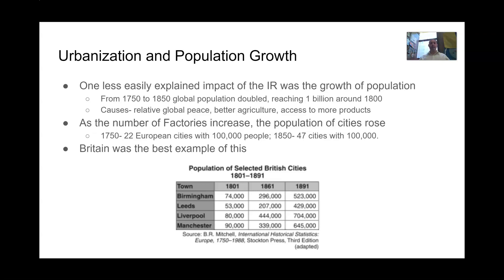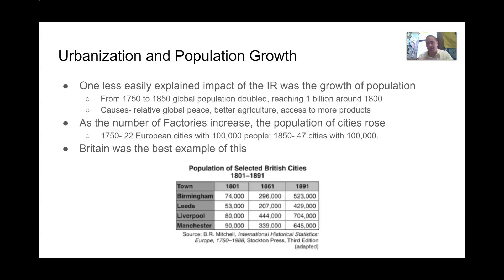Factories are drawing people in — we want people closer to their work environment. Globally speaking, there's also an increase in population, and this is particularly true for Britain, where greater amounts of food are being produced in the 1700s. If people can be well-fed and well-nourished, they have the energy to fight off minor diseases and illnesses, which helps increase their ability to reproduce and leads to better population growth.